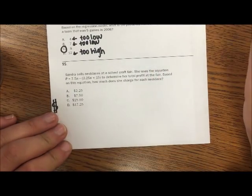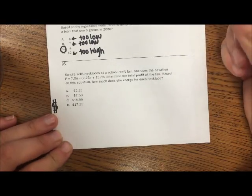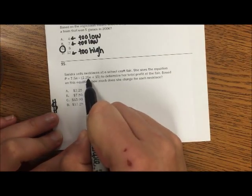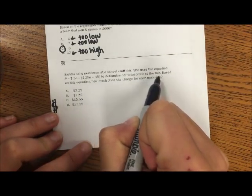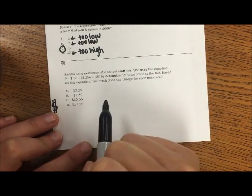95. Sandra sells necklaces at a school craft fair. She uses the equation P equals 7.5N minus the quantity 2.25N plus 15 to determine her total profit for the fair. Based on this equation, how much does she charge for the necklace?